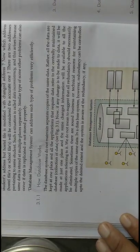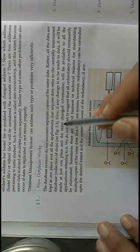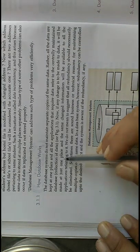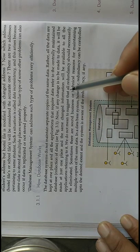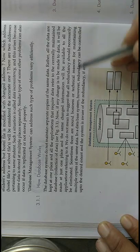Now, how does a database work? The database system does not maintain a separate copy for the same data. Rather, all the data is kept at one place, and all applications that require data refer to this centrally maintained database collection. If any change is to be made to data, it will be made in just one place, and the same changed information will be available to all applications that refer to it.